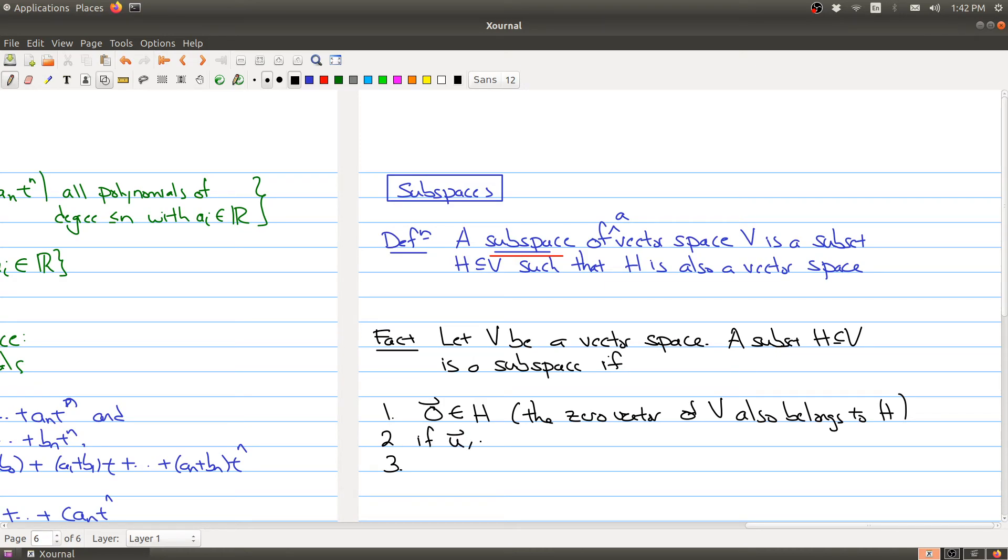Secondly is that it's closed under the operation. So if u and v are in H, then the sum of the two things are still in H. And similarly, if u is in H and c is in R, then it's closed under the scalar multiplication.